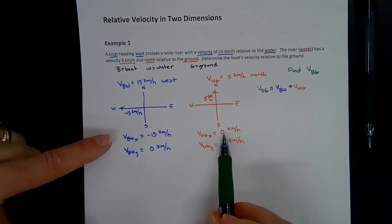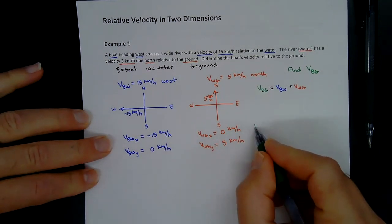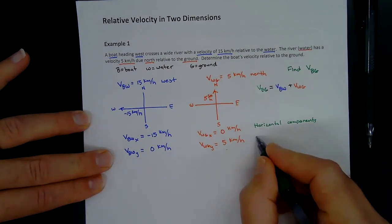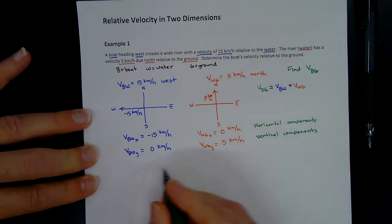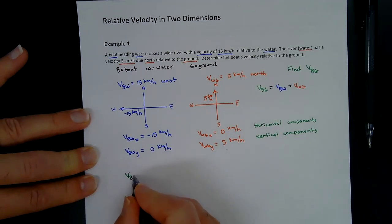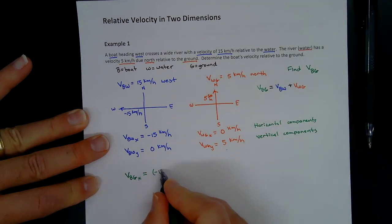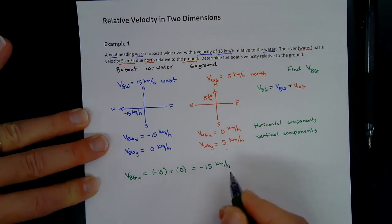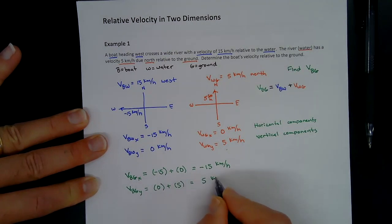Now we add the components together to get V sub BG. The horizontal component: V sub BGx equals negative 15 plus 0, which is negative 15 kilometers per hour. The vertical component: V sub BGy equals 0 plus 5, which gives 5 kilometers per hour.